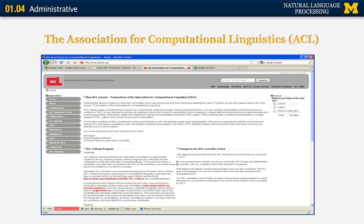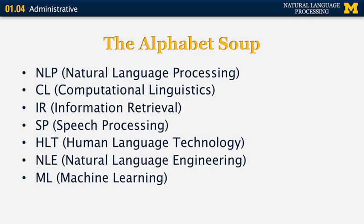The main association for research in this field is the Association for Computational Linguistics, or ACL. There is a difference between computational linguistics and natural language processing, but it's usually considered a relatively minor difference. Natural language processing is the study of the computational treatment of human language. Computational linguistics comes from linguistics and has traditionally included more mathematical and formal approaches, but in recent years those two fields have become more or less interchangeable.